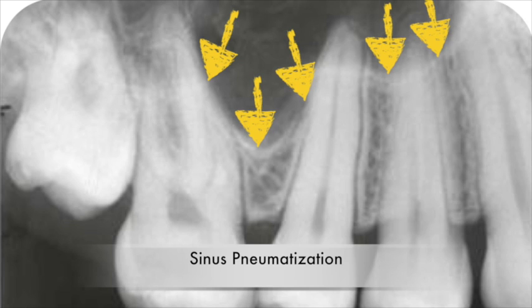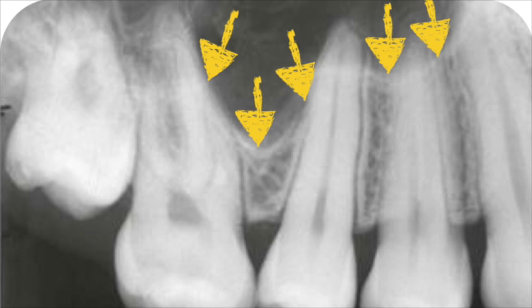In this case, there is either minimal or no bone between the sinus floor and the tip of the roots. Pneumatization of the maxillary sinus around the upper teeth roots increases the risk of inadvertent sinus perforation or opening following extraction of upper molars and also in some instances the second premolars.